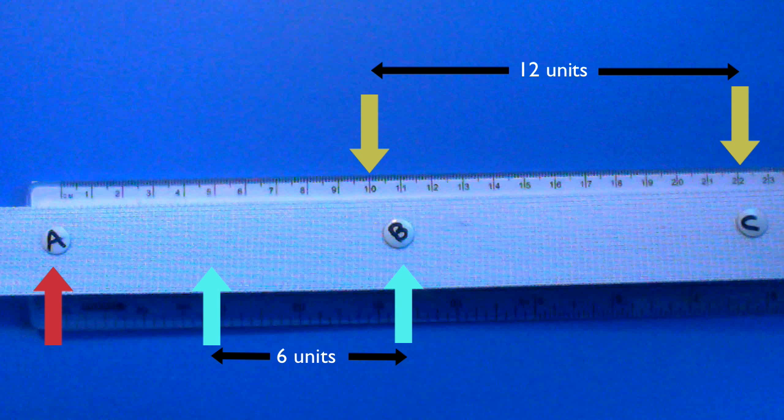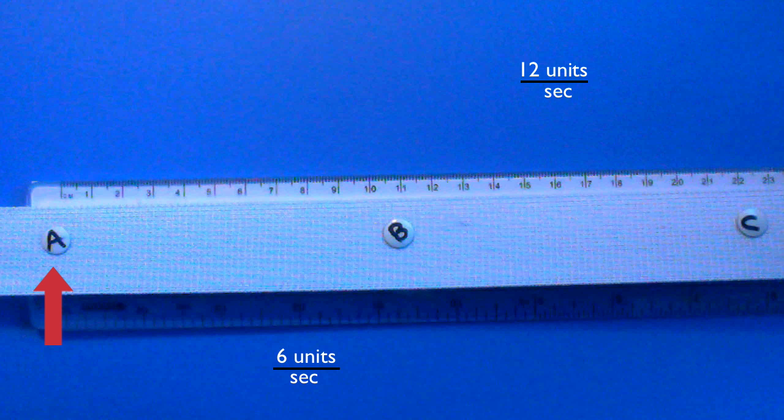Let's say all this happened in one second. So, you see, from A's point of view, galaxy B is traveling away at 6 units per second, while galaxy C is traveling away at 12 units per second.